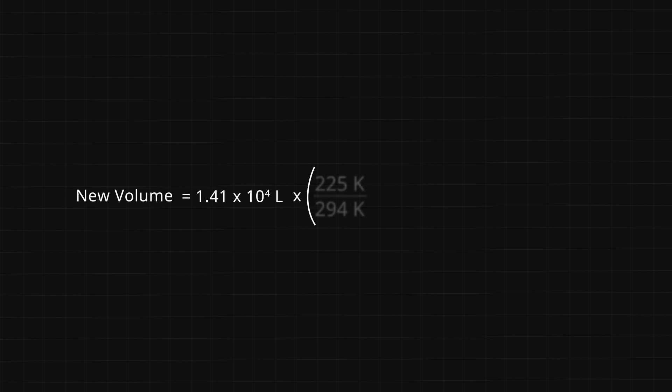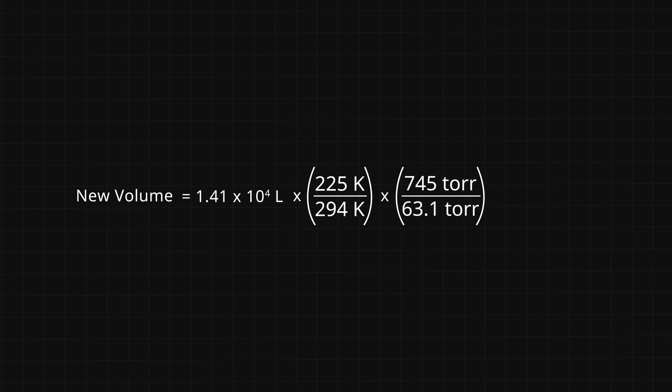Let's try it. The new volume is equal to 1.41 × 10⁴ liters × (225 Kelvin ÷ 294 Kelvin) × (745 torr ÷ 63.1 torr), giving us the answer of 1.27 × 10⁵ liters for the new volume of the balloon high in the atmosphere.